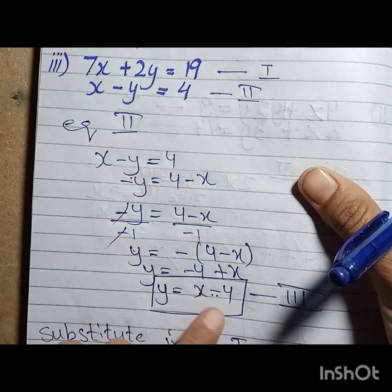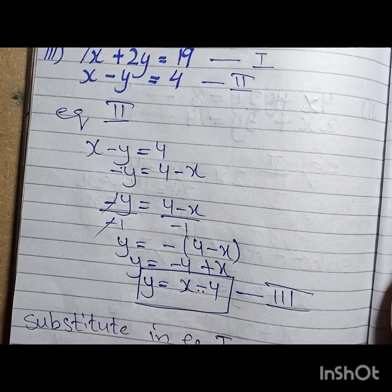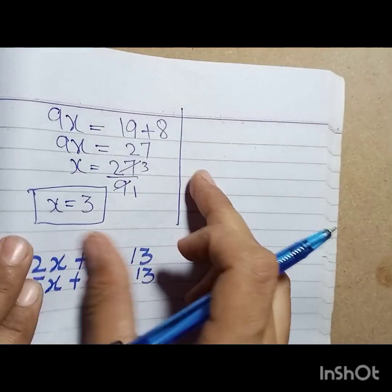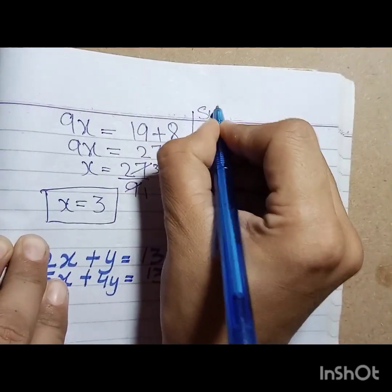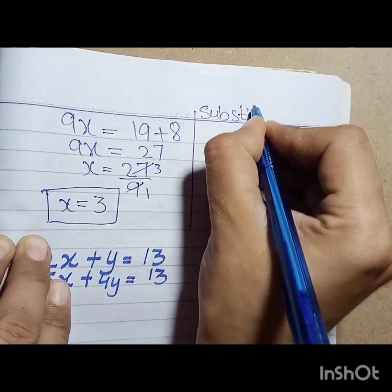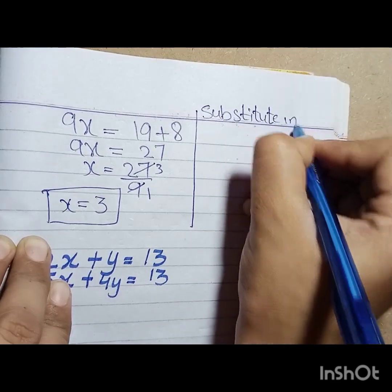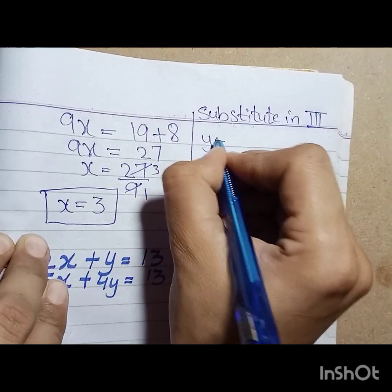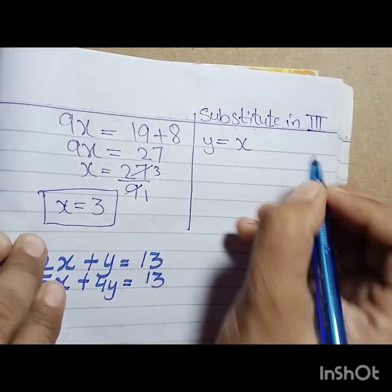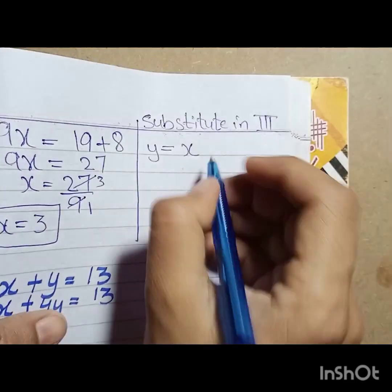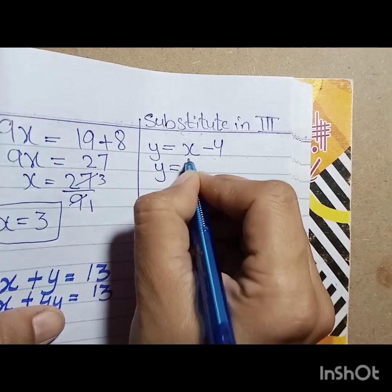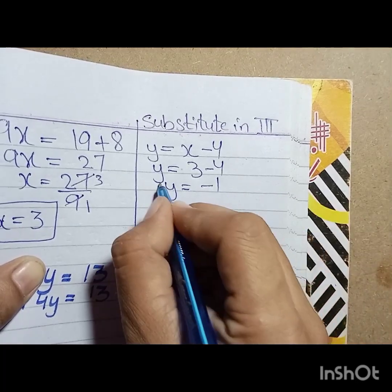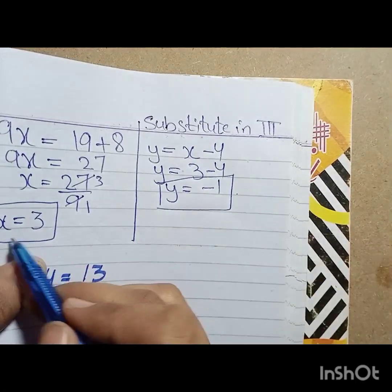We substitute x equals 3 back into equation 3: y is equal to x minus 4, so y is equal to 3 minus 4, giving y is equal to minus 1. Therefore x is equal to 3 and y is equal to minus 1.